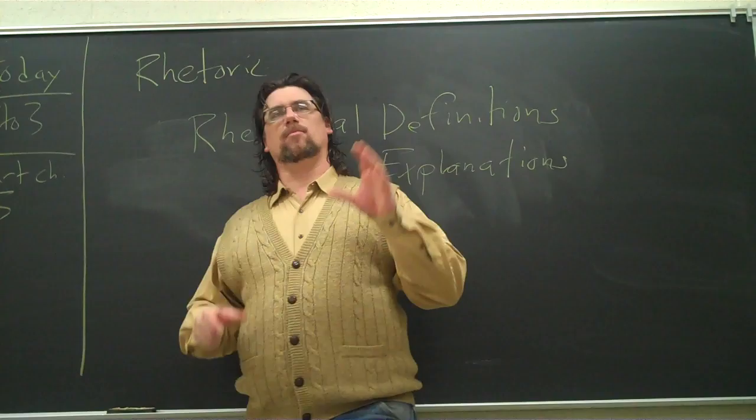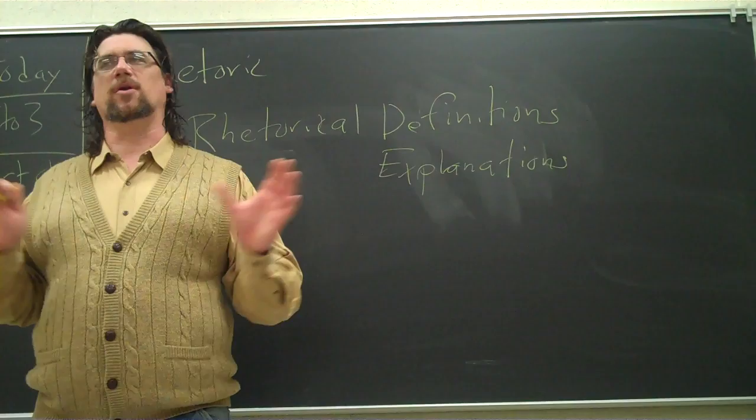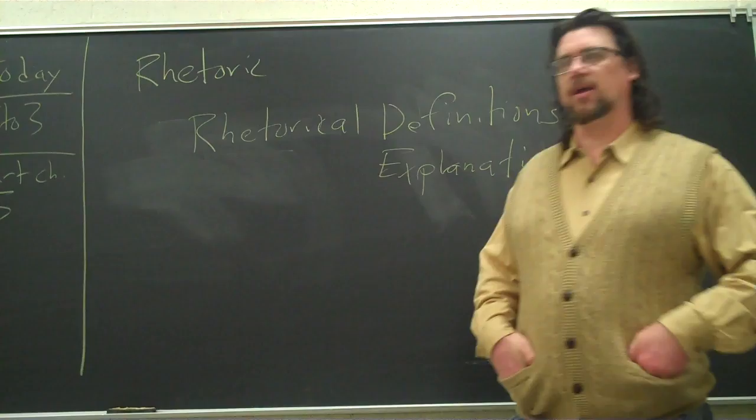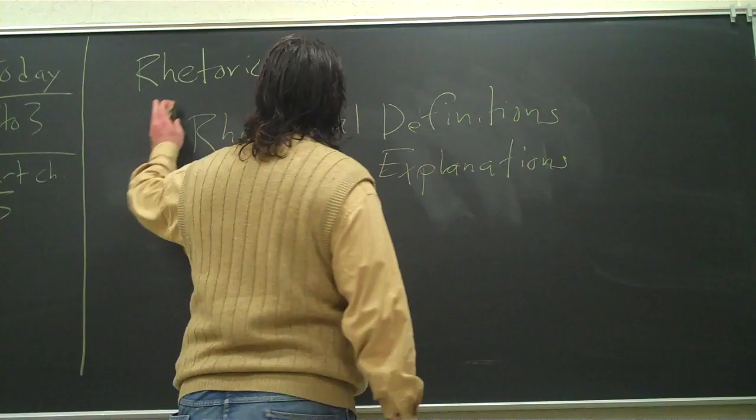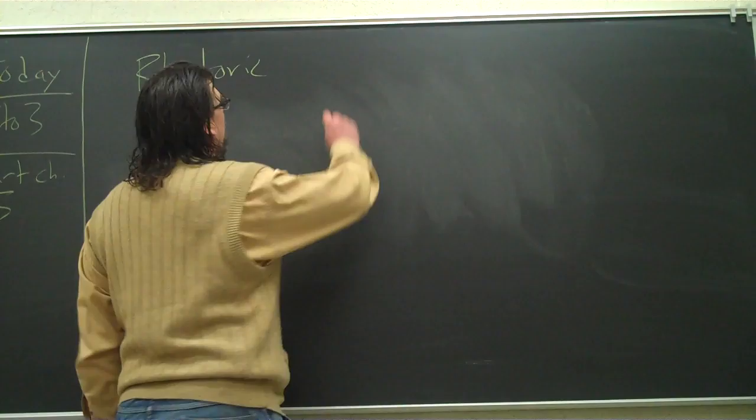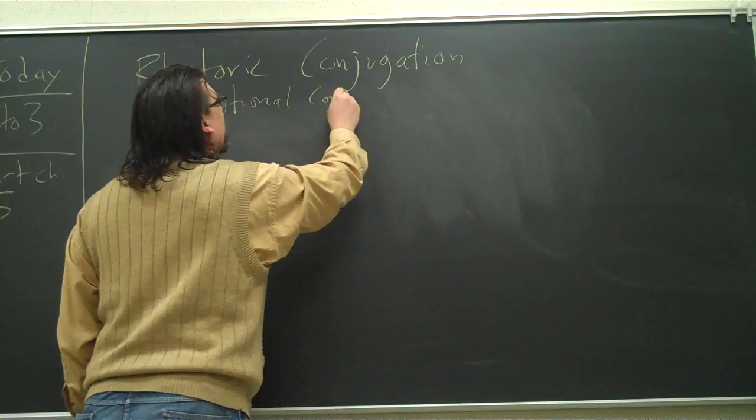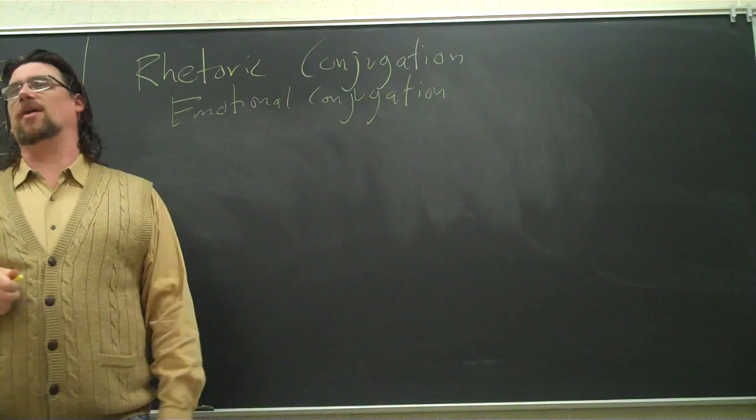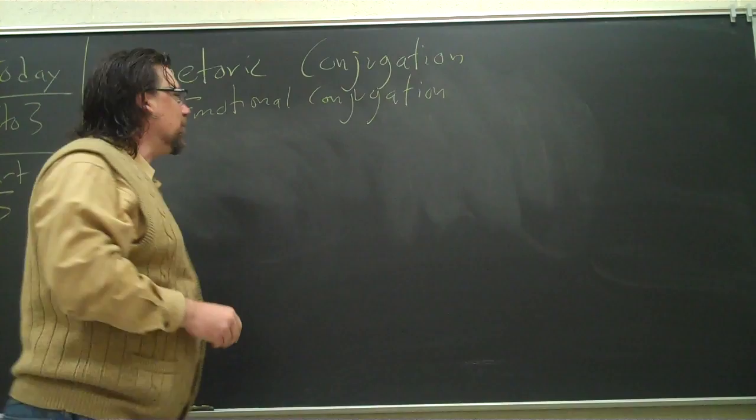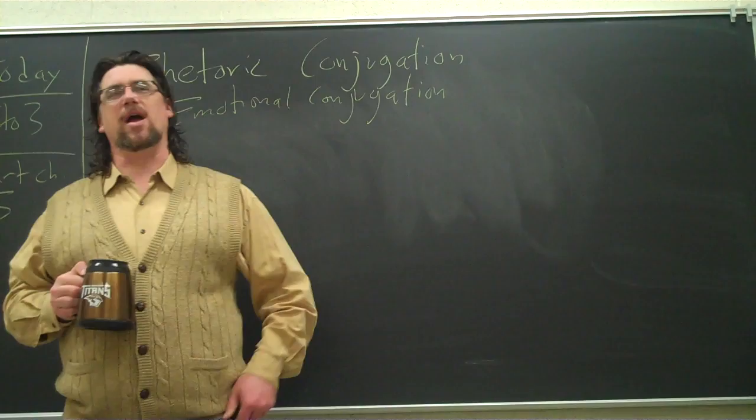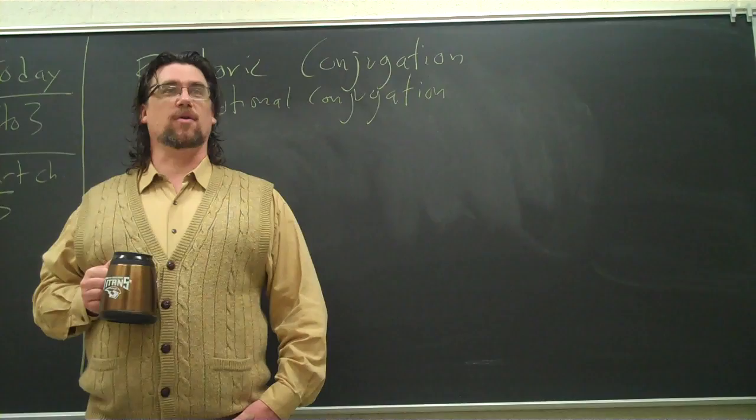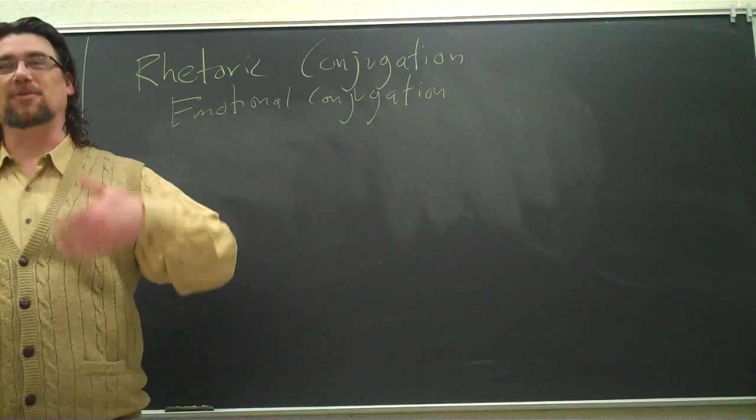Is everybody clear about how you can use rhetoric and euphemism, dysphemism, rhetorical explanation, rhetorical definition? There's actually something that's kind of funny that I thought you'd get a kick out of that ties in with this a little bit. It's often called a rhetorical conjugation or another word that you'll see is emotional conjugation. And sometimes it's actually named after a particular philosopher, Bertrand Russell, who didn't make these up but popularized these by talking about them on the radio. Now, in the old days, when we used to teach grammar in school, which they don't do very much anymore, you had what was called conjugation of verbs.